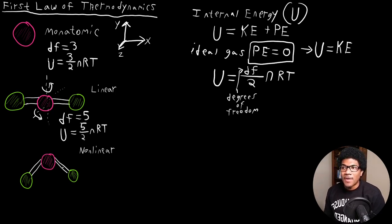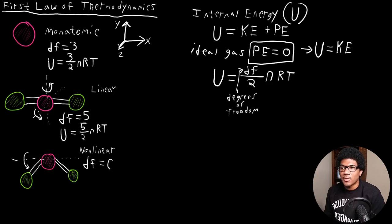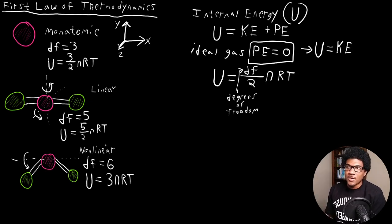For a nonlinear gas, you have the three translational degrees of freedom and two rotational degrees of freedom around the Y and Z axes. But you also have an additional rotational degree of freedom around the X axis as well — rotating around that axis also changes the representation of the molecule. So for a nonlinear molecule, DF equals six, giving six total degrees of freedom and an internal energy of 3NRT. These are your differing internal energy expressions based on whether your gas is monatomic, linear, or nonlinear.